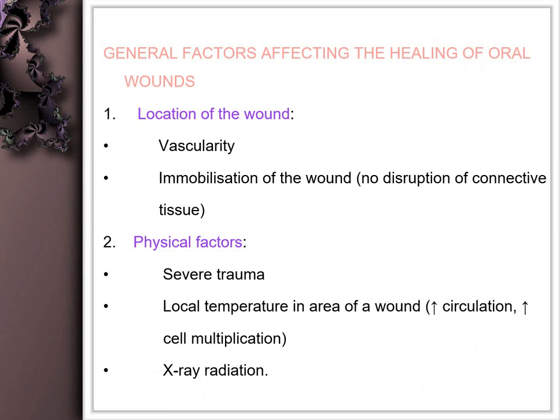The general factors affecting healing of oral wounds include, first, location. Any tissue that is highly vascular will show better healing. Mobile areas like the knee, joints, and neck can show delayed wound healing, so immobilization of the wound to prevent disruption of the connective tissue or granulation tissue that is formed is better for healing.